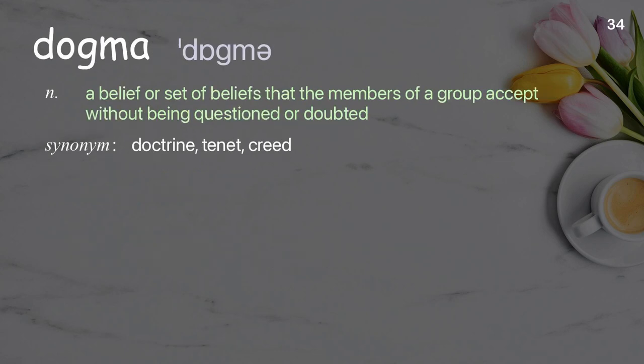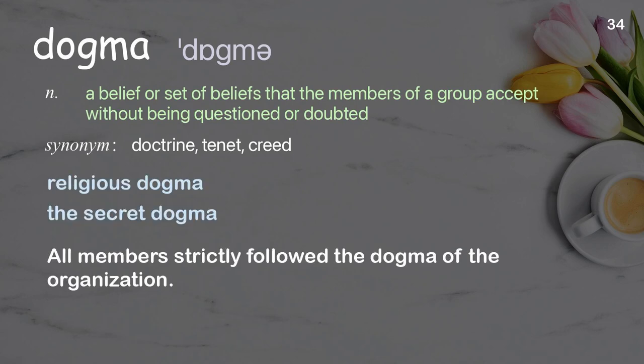Dogma: a belief or set of beliefs that the members of a group accept without being questioned or doubted. Examples: religious dogma, the secret dogma. All members strictly followed the dogma of the organization.